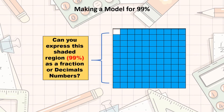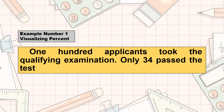Can you express the shaded region, or 99%, as a fraction or a decimal number? We will find out later. As defined earlier, percent is a ratio of a number to 100. We already know that ratios can be expressed in fractions and decimal numbers. Therefore, percent may also be expressed as fractions, decimal numbers, and vice versa. To make things clear, consider this example.